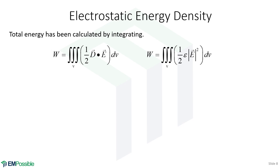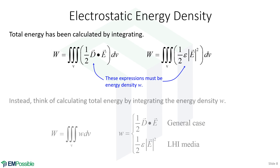We've derived two equations for calculating total energy stored in the electric field. The first is valid for all cases — completely general. The second, one-half ε|E|², is a little simpler but only valid for linear, homogeneous, isotropic materials. If we integrate something to get a total quantity, that something is a density. So we can identify the energy density w: in the general case it is w = ½ D·E, and for linear, homogeneous, isotropic material it is w = ½ε|E|². Total energy is then the volume integral of the differential energy density.